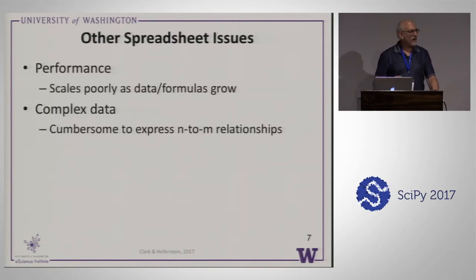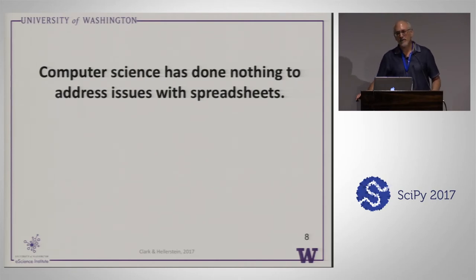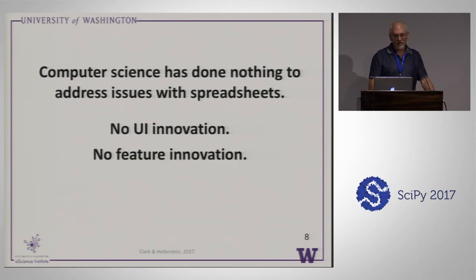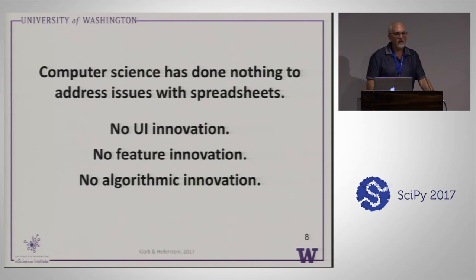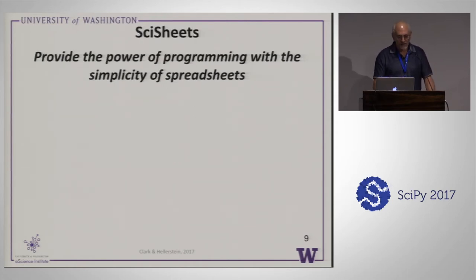We do have a paper in the proceedings covering performance and complex data. But my main point is that computer science has really done nothing for the vast majority of people who do calculations. Computer engineering has done a lot — Microsoft, Google Sheets, Open Office have advanced greatly. But in terms of innovations in user interface, features, or algorithms, to say you're a spreadsheet user is like saying you're gay in the 1980s — people stay away from you. We're trying to have all spreadsheet users come out of the closet with better tooling. That's what we're doing in this project, SciSheets.